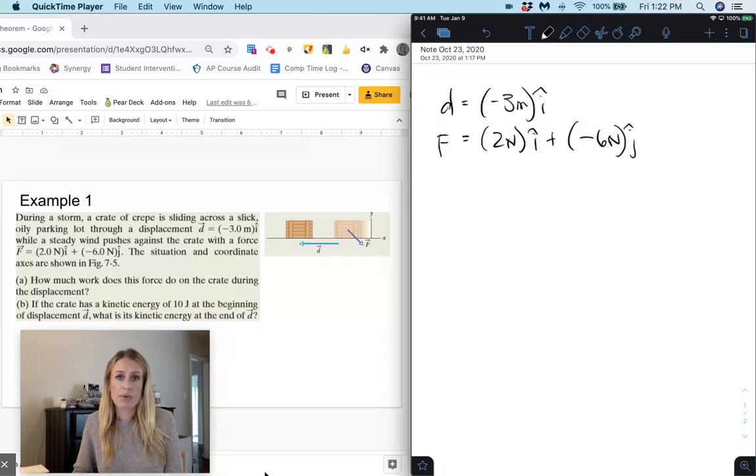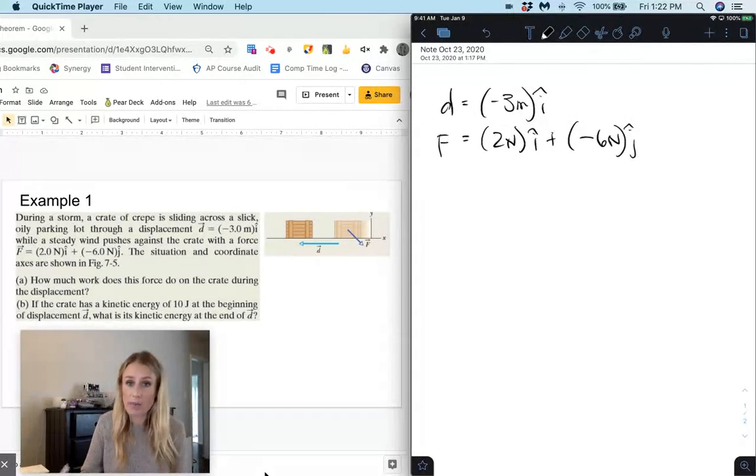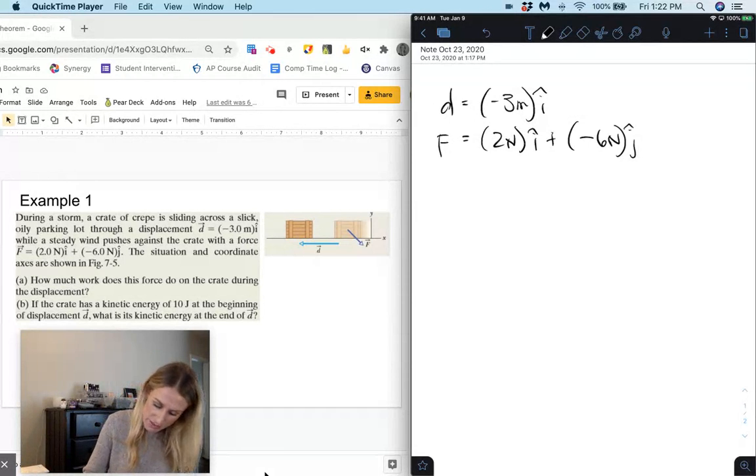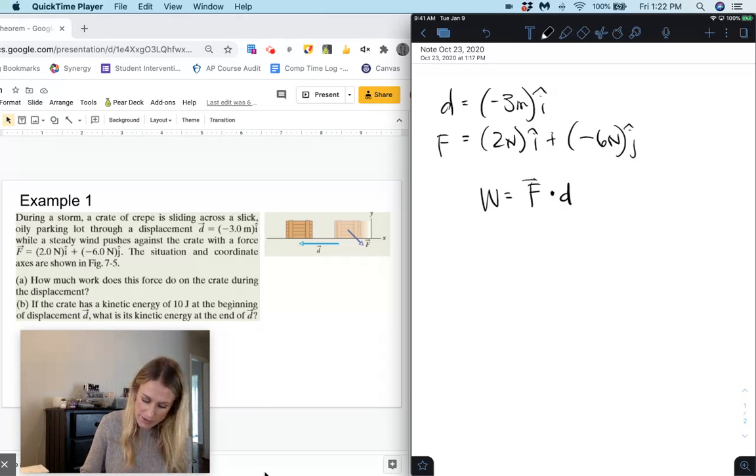Now because they gave us both the displacement and the force in unit vector notation we can use that dot product method to solve for our work done. So remember when we have dot product, the work is equal to force dot d and of course these two are vectors.